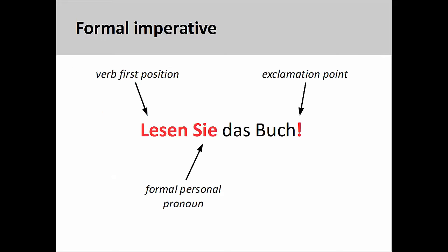In a prior presentation, we saw that the formal imperative was easy to form. You simply put the verb in the first position, the formal personal pronoun Sie in the second position, and add an exclamation point. You may wish to review that presentation before continuing with this one.